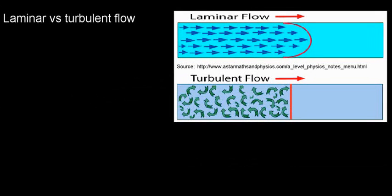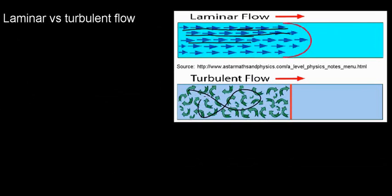As this image suggests, laminar flow is when all the layers of a fluid are going parallel to one another — they're not smashing into each other, not interfering, and there's no mixing. But if you look at turbulent flow, you can see that particles are definitely in the way of one another, interfering and mixing, and energy is wasted.